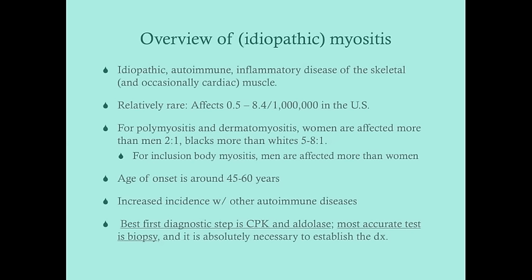There is an increased incidence of idiopathic myositis with other autoimmune diseases. Patients who have Sjögren's syndrome, scleroderma, rheumatoid arthritis, or lupus are at increased risk for myositis, particularly polymyositis and dermatomyositis. The best first step when suspecting these is CPK and aldolase, which are indicative of muscle inflammation. The most accurate test, however, is biopsy, which is necessary to establish the specific diagnosis.